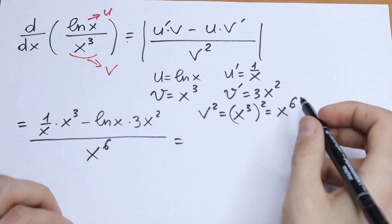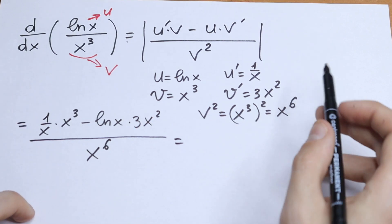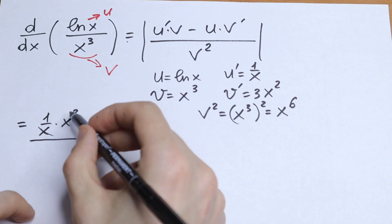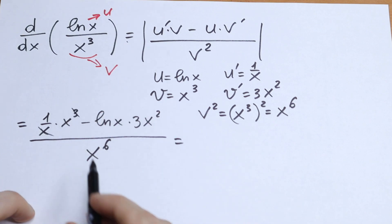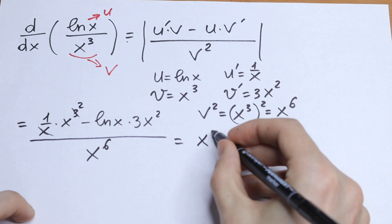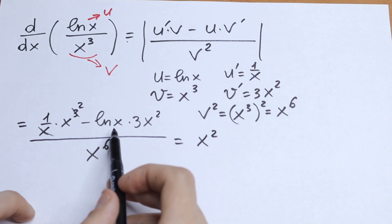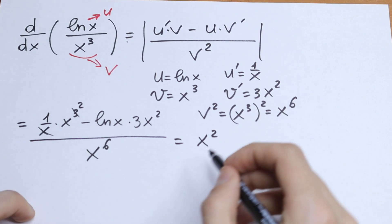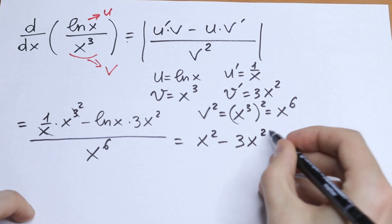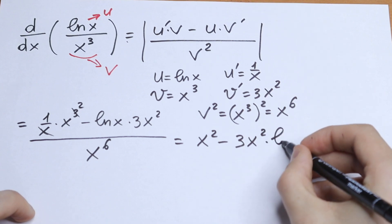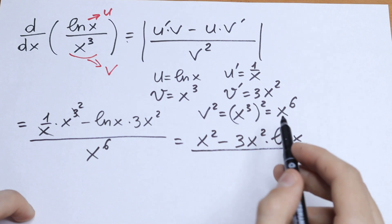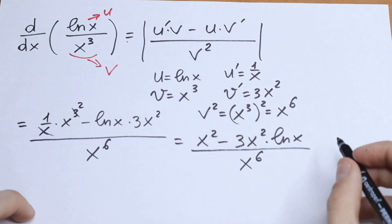Now we simplify. I can see that the x in 1/x and x cubed can cancel, giving us x squared. On the other side, we can't simplify further, so I'll just reorder: we have x squared minus 3x squared times natural log x, all divided by x to the sixth power.